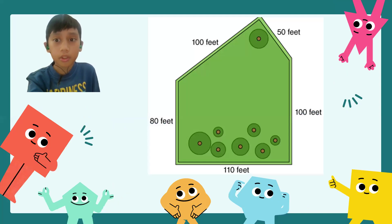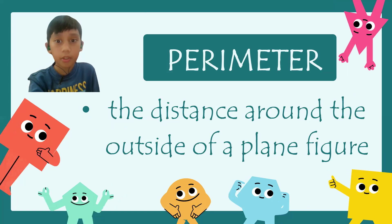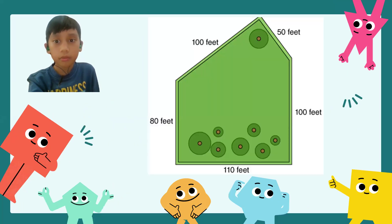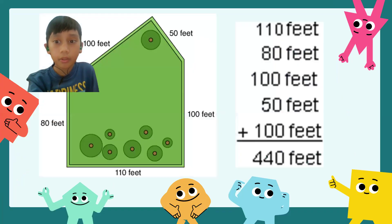Since the perimeter is the distance around the edge of a figure, we can find the perimeter of a polygon by adding the length of each side. Here is an example to show what the perimeter is. The park is a pentagon, so we can add the length of the five sides to find the perimeter.